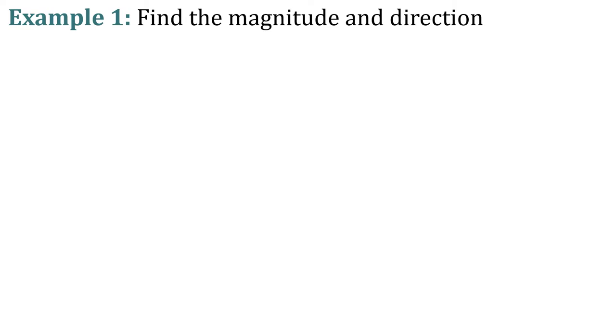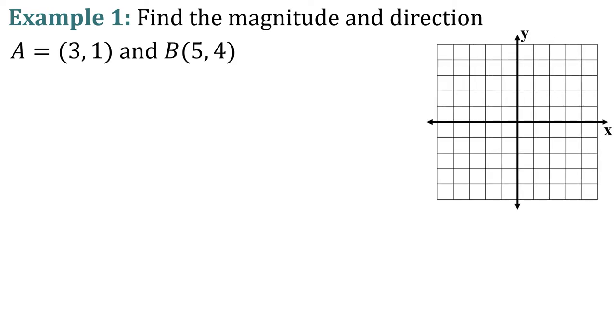So let's look at an example where we find the magnitude and the direction. We're given a vector A is (3, 1) and B is (5, 4). So we know that A is our initial point and B is our terminal point. So let's see what this looks like: A is 3, 1, so out 3, up 1, and B is 5, 4. So out 5, up 4, and then we have a vector that looks like this. So that's what our vector looks like, and we're going to find, first we're going to find the magnitude. To find the magnitude, we have to use the distance formula. That's going to be our x components squared plus the difference of our y components squared.